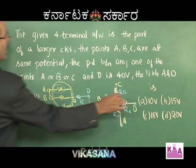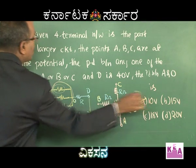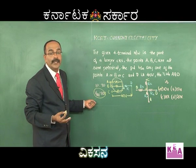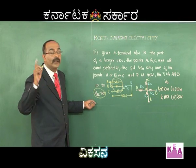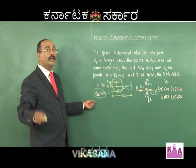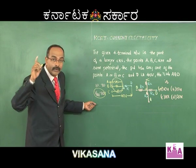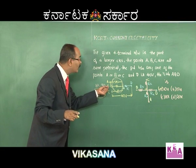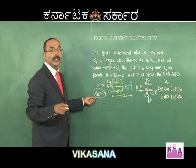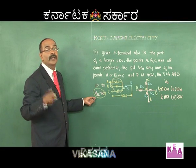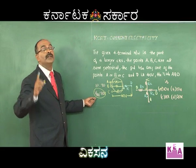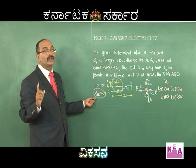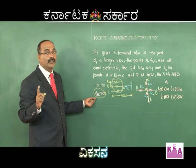So the voltage between A and O is equal to 10 volts — option A is correct. See how simple it is. We are just using basic logic, ratio concepts, without finding out individual resistances or currents. This is how problems should be solved in CET. We are solving using ratio problems and ratio concepts.